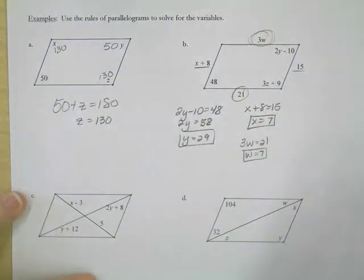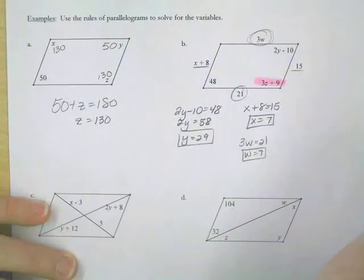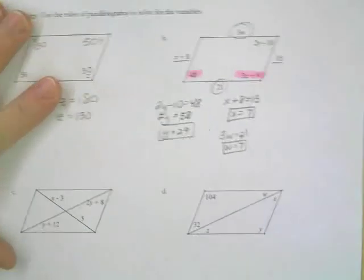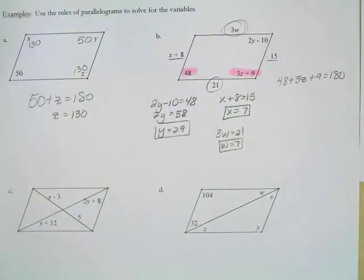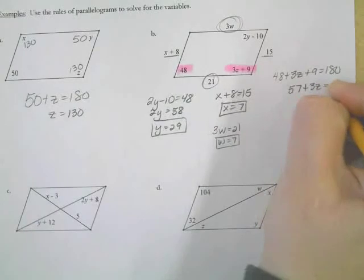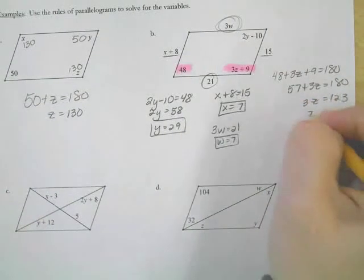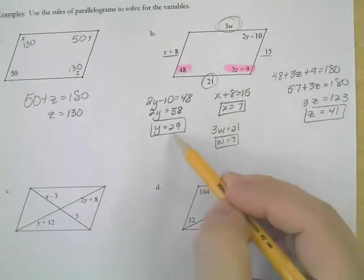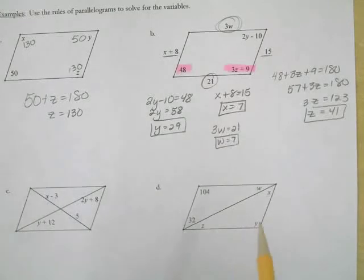The last one I need to find is the Z, and Z is probably the hardest equation. The 3Z plus 9 is adjacent to 48, and based on rule number 3, adjacent angles are supplementary. So it will be 48 plus 3Z plus 9 is 180. I'm going to combine my terms by doing 48 plus 9, which gives me 57 plus 3Z is 180. I'm going to subtract 180 from the 57, and I get 3Z is 123, divide by 3, and I get 41. So X is 7, W is 7, Y is 29, and Z is 41.